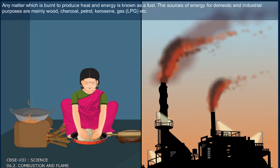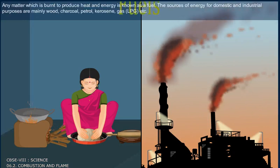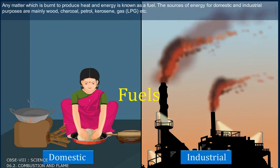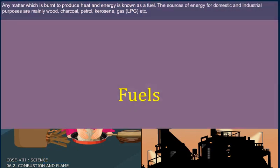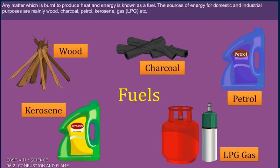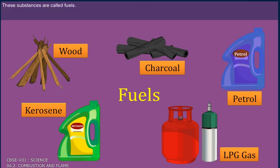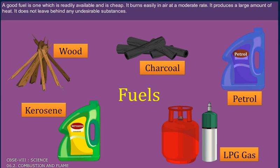What is a fuel? Any matter which is burned to produce heat and energy is known as a fuel. The sources of energy for domestic and industrial purposes are mainly wood, charcoal, petrol, kerosene and gas — these substances are called fuels. A good fuel is one which is readily available and cheap, burns easily in air at a moderate rate, produces a large amount of heat, and does not leave behind any undesirable substances.